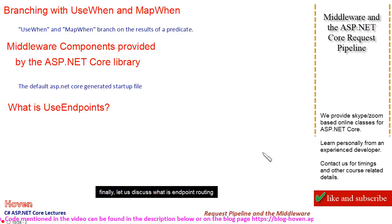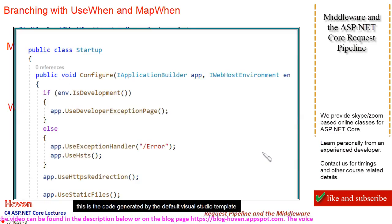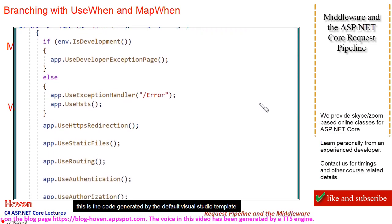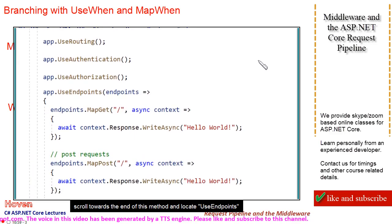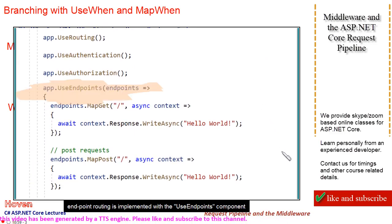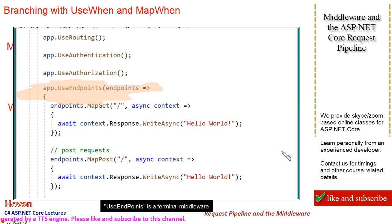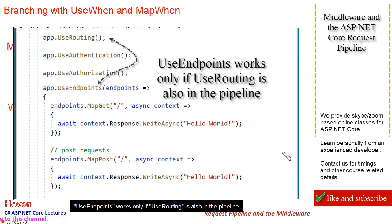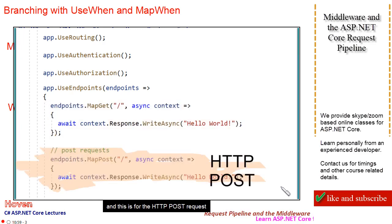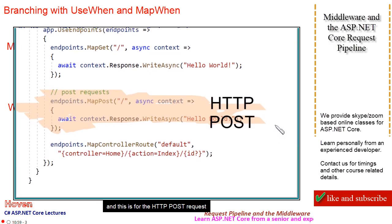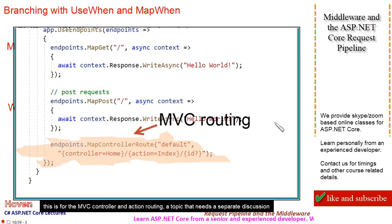Finally, let us discuss what endpoint routing is. This is the code generated by the default Visual Studio template. Scroll towards the end of this method and locate UseEndpoints. Endpoint routing is implemented with the UseEndpoints component. UseEndpoints is a terminal middleware. It uses Map for branching and routing the requests. UseEndpoints works only if UseRouting is also in the pipeline. This is a terminal branch for an HTTP GET request for the home page, and this is for the HTTP POST request. This is for the MVC controller and action routing, a topic that needs a separate discussion.